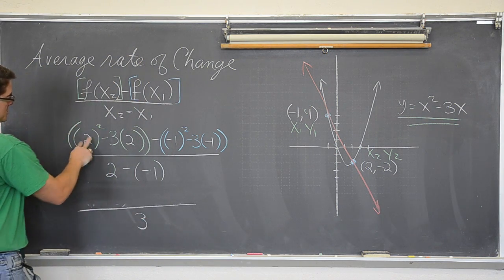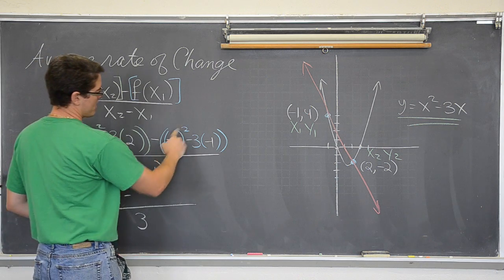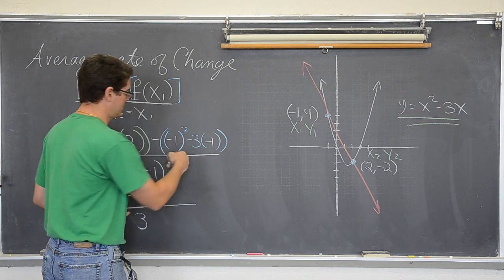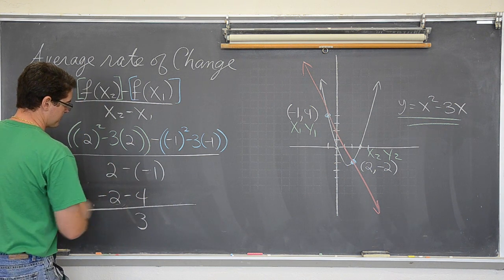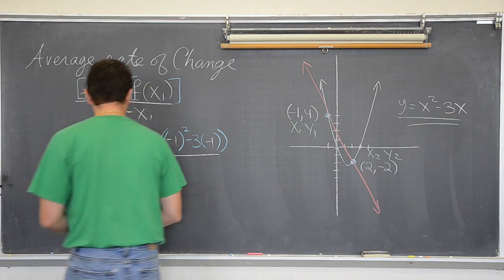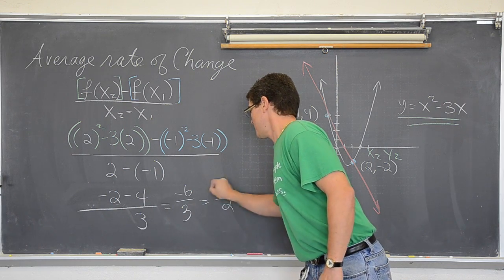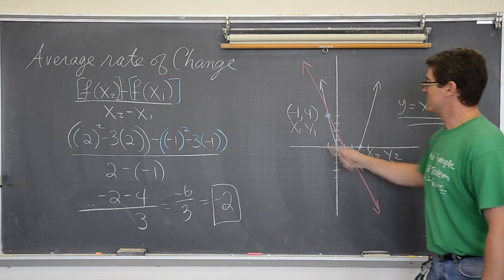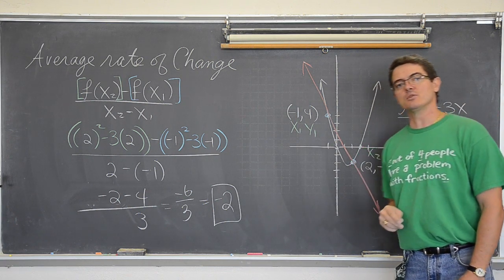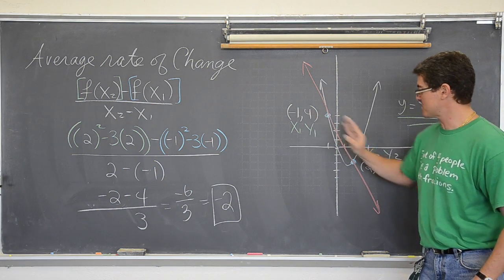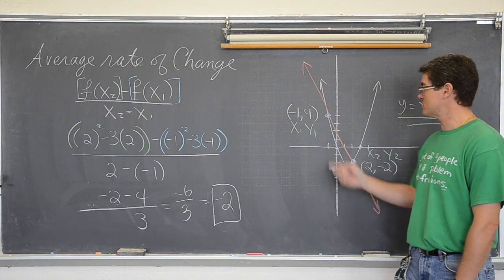2 squared minus 6 is negative 2. Minus 1 plus 3 is equal to 4. So it is negative 2 from here minus a positive 4. And we get as our final answer, negative 2 minus 4 is negative 6 over 3 which is negative 2. So our average rate of change for this parabola between the values of negative 1 and positive 2 is negative 2. And again, in a pre-calculus book they are not going to give you these y values. They are expecting you to find these y values on your own. So just be aware of that.